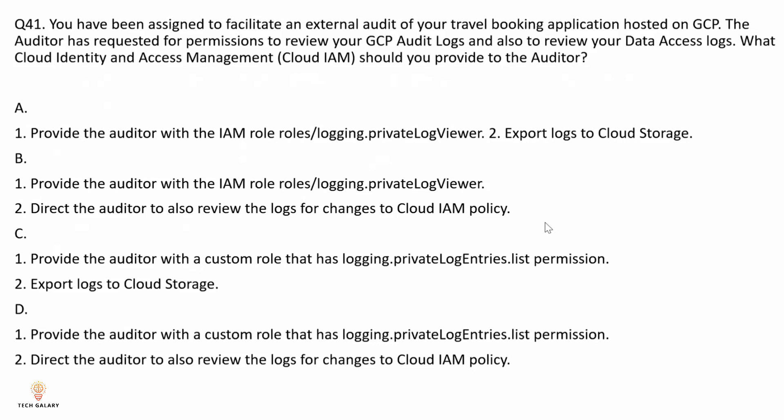Question 41: You have been assigned to facilitate an external audit of your travel booking application hosted on GCP. The auditor has requested permissions to review your GCP audit logs and also to review your data access logs. What Cloud Identity and Access Management role should you provide to the auditor? The correct answer is option B.